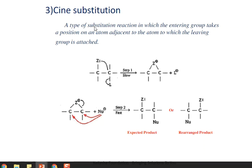The third consequence is syn substitution. This is a type of substitution reaction in which the entering group takes a position on an atom adjacent to the atom to which the leaving group is attached. The nucleophile takes the position adjacent to the carbon bearing the leaving group. Due to neighboring group participation in step one, the nucleophile can attack on both equivalent sides, and the expected product is a rearranged product.